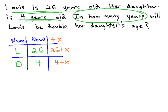Now that the table is filled in, we look at the last part of the problem to find out what's happening in the future. Lois is going to be double her daughter's age.